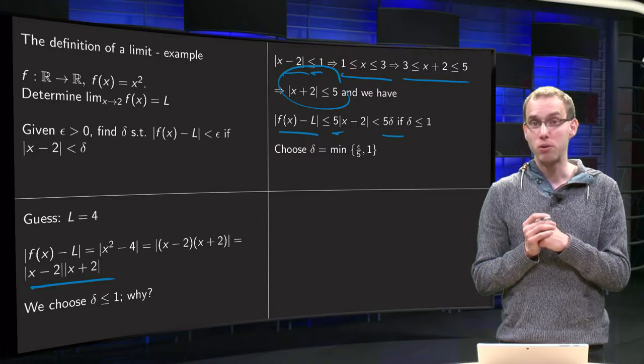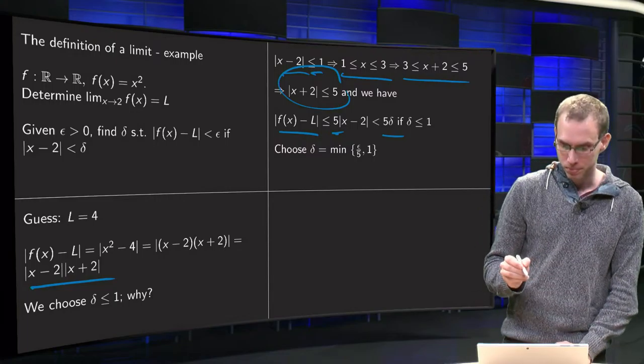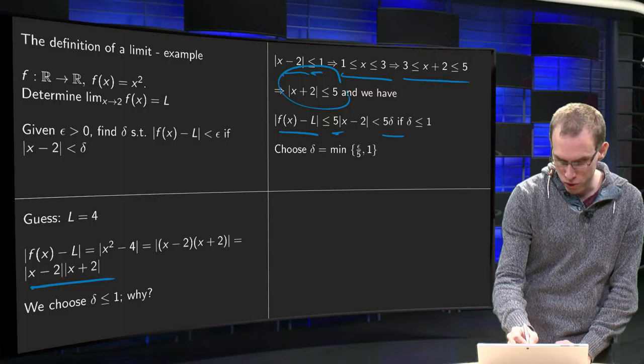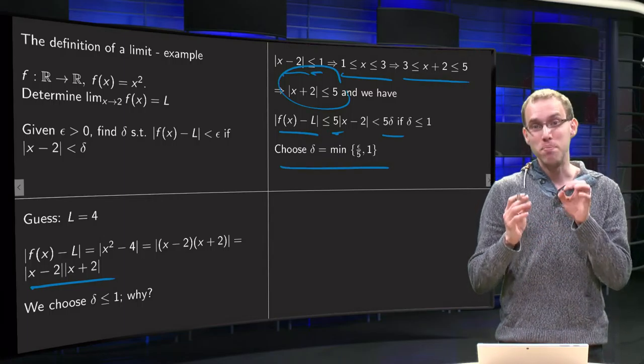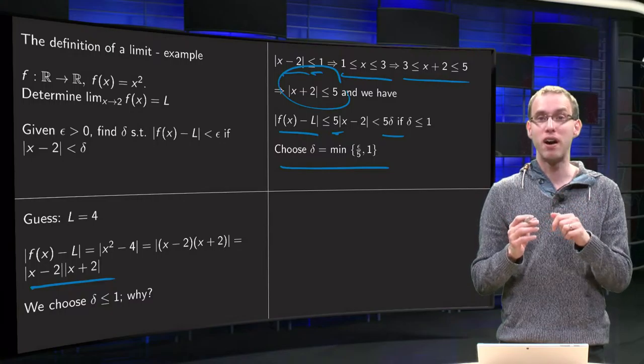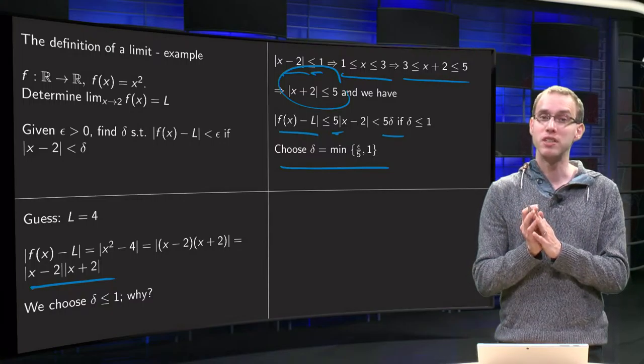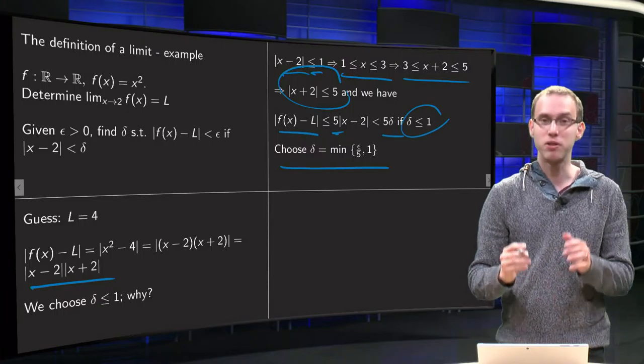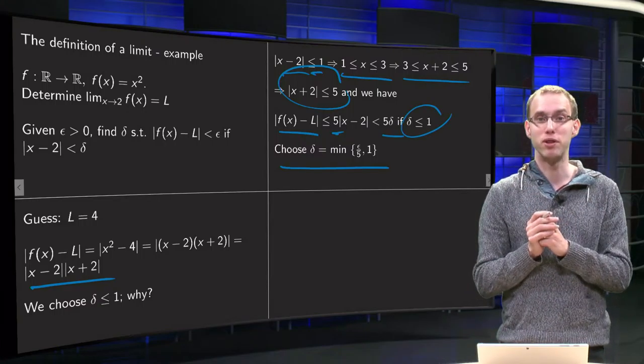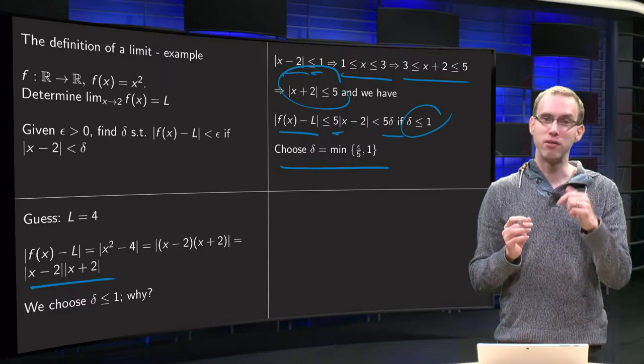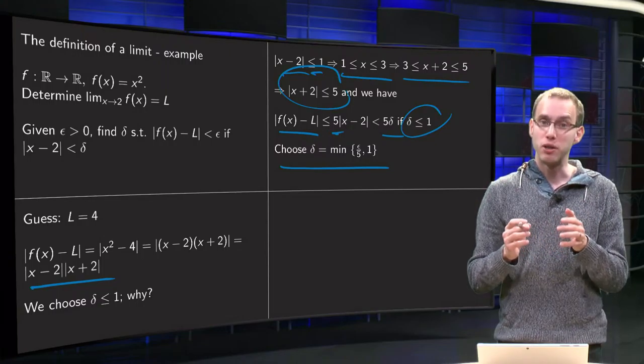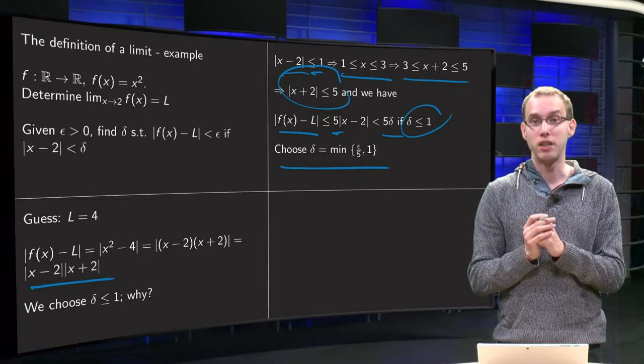So how are we going to choose our delta? We choose delta such that delta is the minimum of epsilon over 5 and 1. So that means this condition is satisfied because we choose our delta as the minimum of those two. So suppose someone gives you an epsilon of 10, then 10 over 5 equals 2, so the minimum of 2 and 1 equals 1, then we choose our delta to be 1.